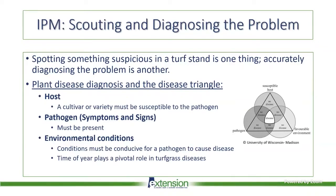Time is considered a fourth component to the disease triangle. Overall, you have to have a susceptible host, a pathogen able to cause disease on that host, and conditions conducive in terms of temperature, prolonged periods of leaf wetness, irrigation, and that kind of thing for disease to occur.